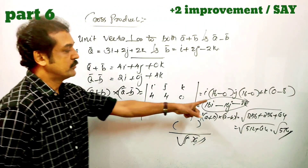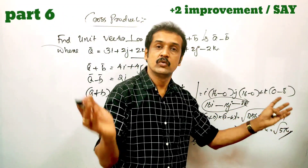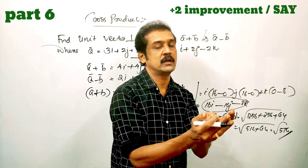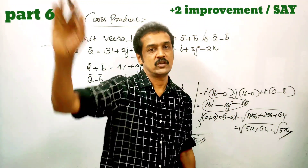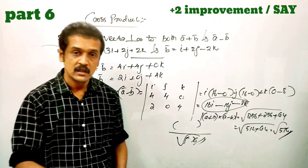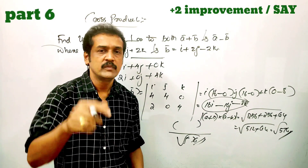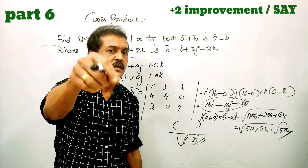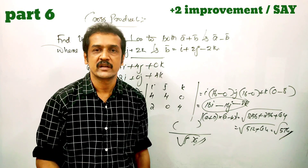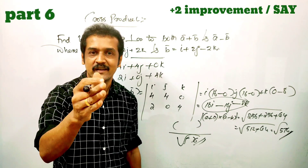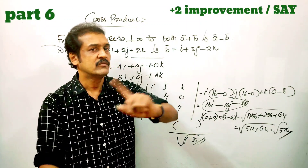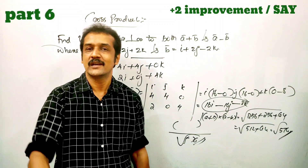So if you want to write this, you can write the unit vector perpendicular to both A plus B and A minus B. All the problems are done. If you want to subscribe to the class, please don't forget to subscribe. Bye.